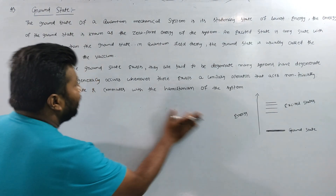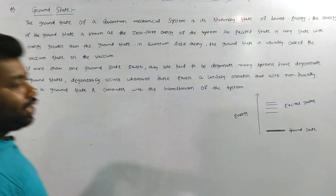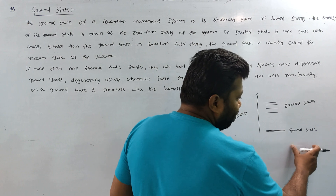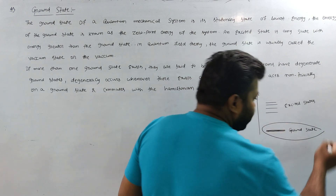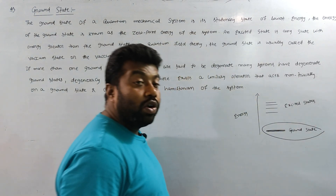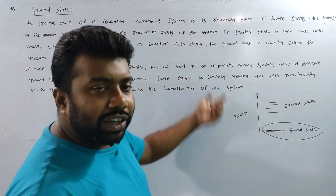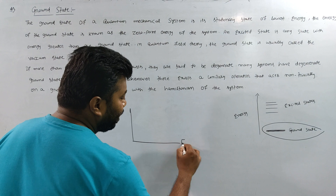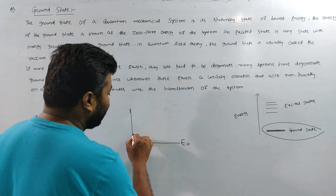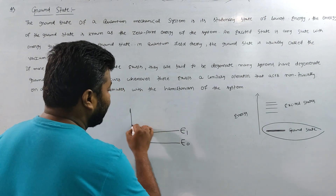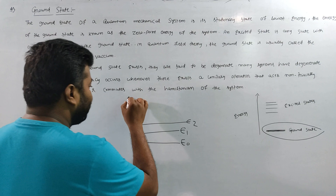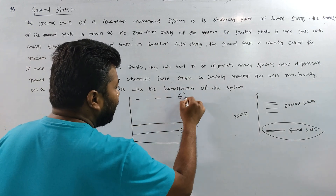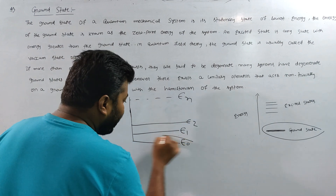So, how do we know the ground state? Now, we have to look at our energy level diagram. We have to get the lower energy states. The energy state is very little. We have to add the energy level diagram — E0, E1, E2 — and then we have more energy states.